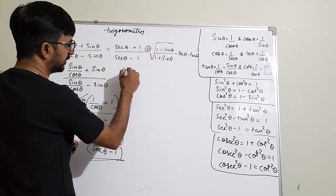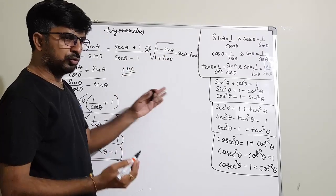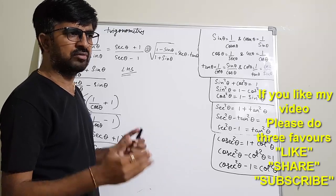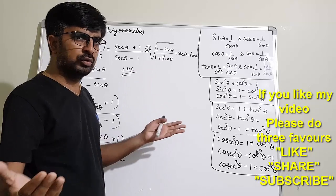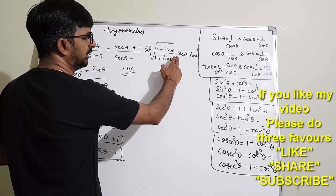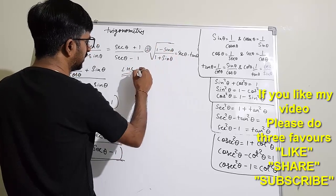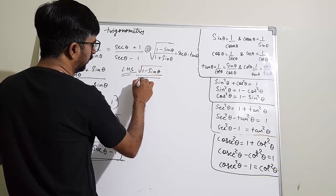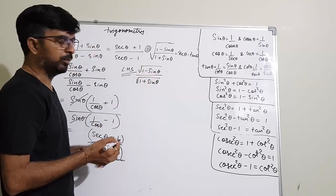Now moving to question number 2 LHS. Under root is given. Don't worry — every time whenever a root is there, we use the concept learned in 9th standard: we need to rationalize to remove the root. So here also we are going to rationalize. Let us see: under root of 1 minus sin θ upon 1 plus sin θ equals 1 minus sin θ.